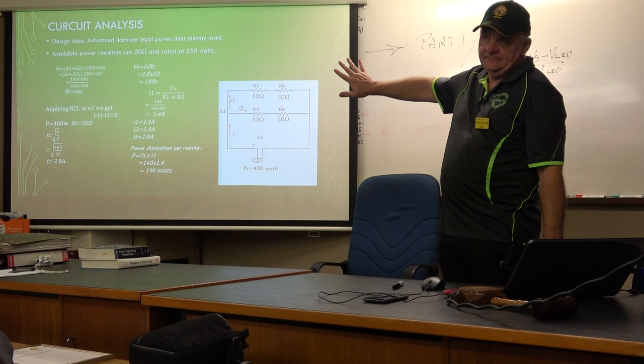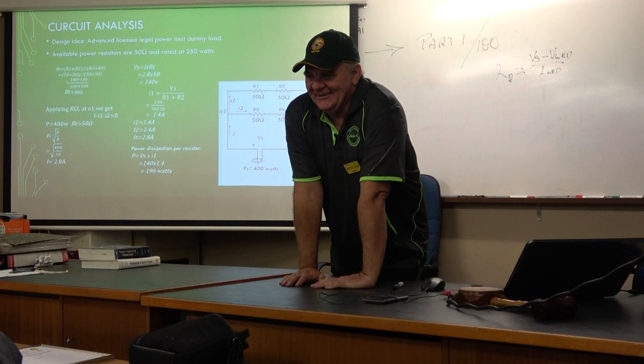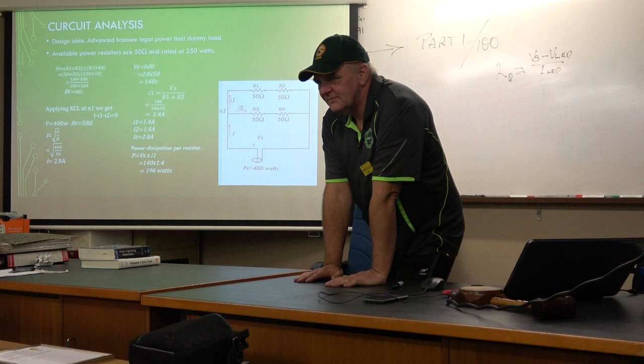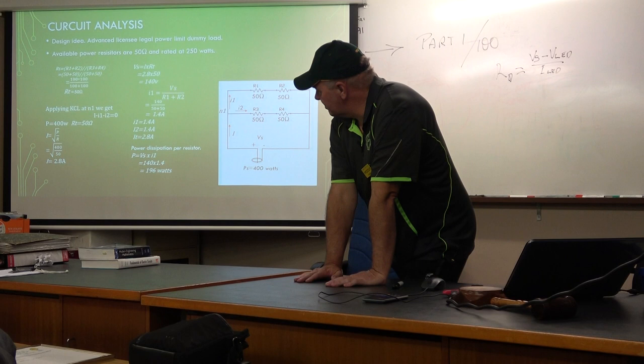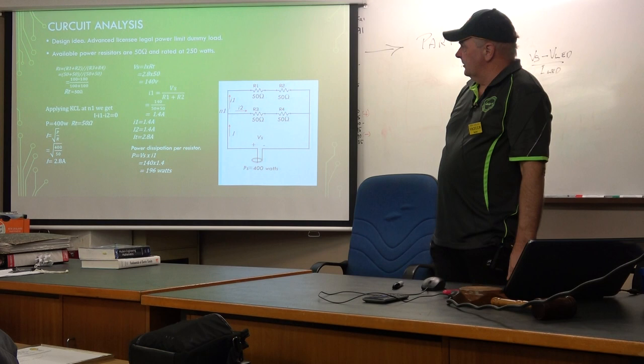Any other questions? That's the end of part one. An audience member clarifies the calculation: if you divide 50 into 400 you get 8, so you're really looking at the square root of 8, which is a little less than 3. The step is: you do 400 ÷ 50 first to get 8, then take the square root to get 2.82 amps.